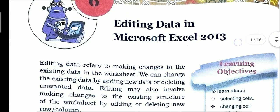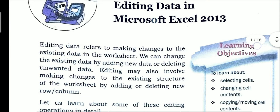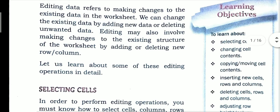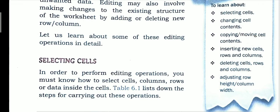Editing data means making changes to the existing data in the worksheet. We can also make changes to the structure of the worksheet by adding or deleting rows or columns. In this chapter we will learn about how to select cells, change cell contents, copy or move cell contents from one cell to another, insert cells, rows and columns, delete cells, rows and columns, and how to adjust row height and column width — that is, how to resize cell size.